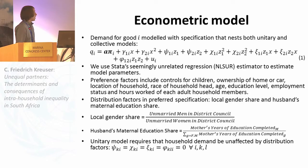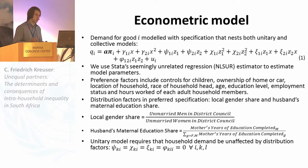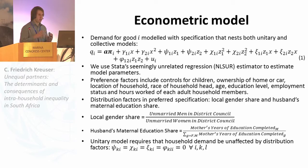We model the demand for a good i using a quasi-quadratic specification, where demand is dependent on preference factors, household income and its quadratic term, and distribution factors. We use the seemingly unrelated regression (SUR) estimator to estimate the model parameters, and we control for factors such as children in the household, ownership of home or car, rural or urban status, race of the household head, and individual household member variables including age, education level, hours worked, and employment status. Our preferred distribution factors are the local gender share — unmarried men over unmarried women in the district council — and the husband's maternal education share, calculated as the male's mother's years of education over the sum of both spouses' years of education.